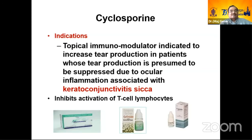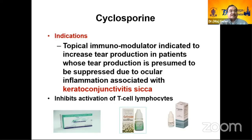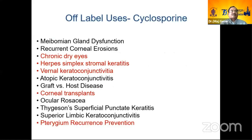Cyclosporine is no longer off-label — it has been approved for ocular surface disorders and pterygium cases. Preservative-free formulations are also available. However, patients must be counseled, because someone might say, 'this was used for cancer and now I have developed cancer.' Awareness, informed consent, and explanation are very important — for both on-label and off-label drugs.